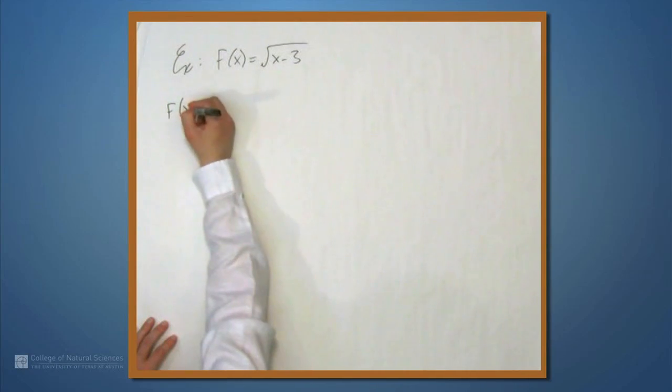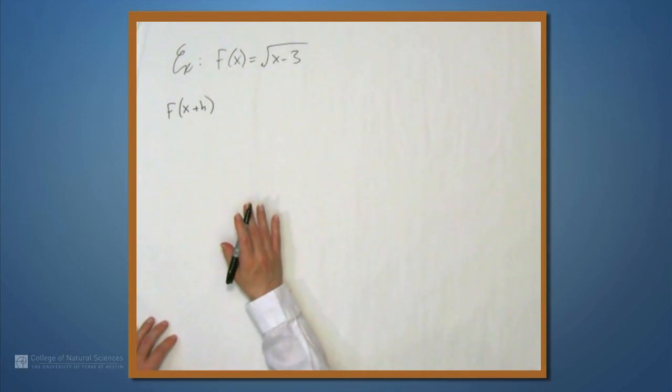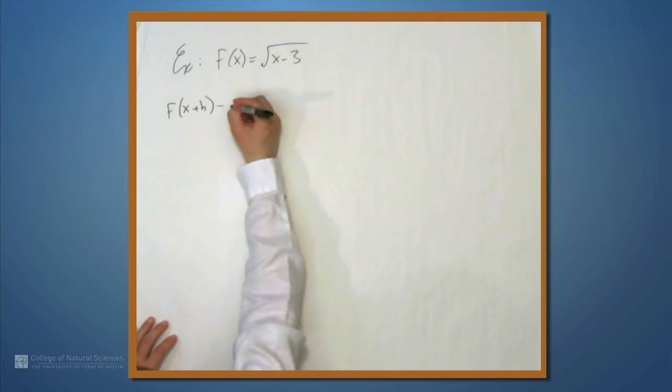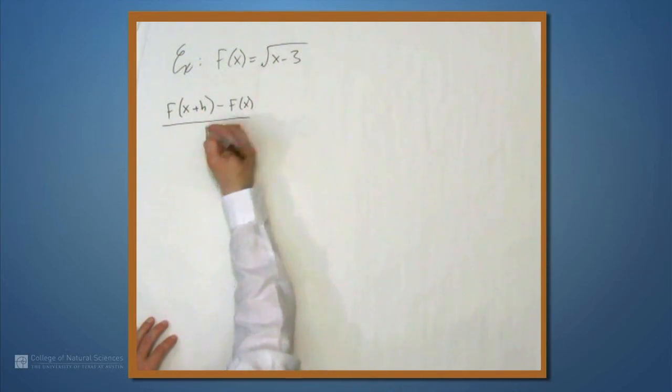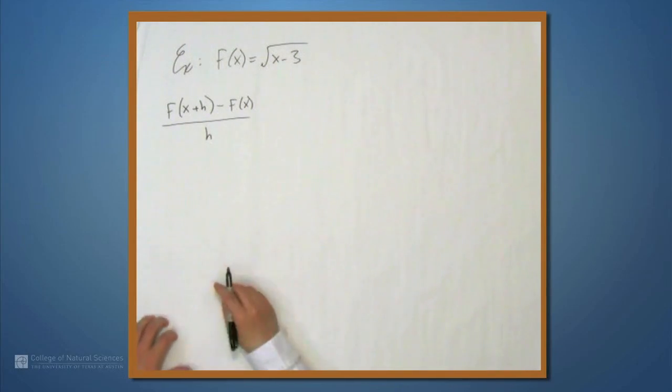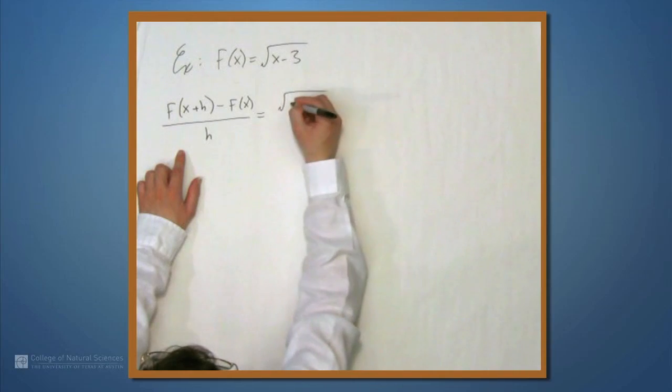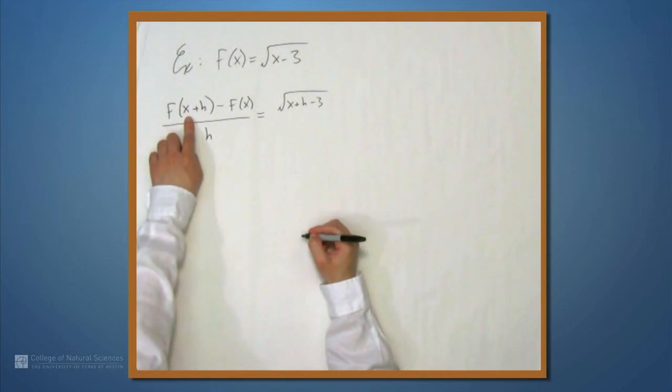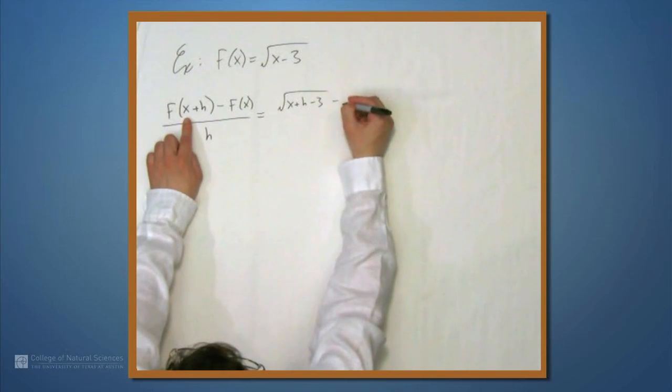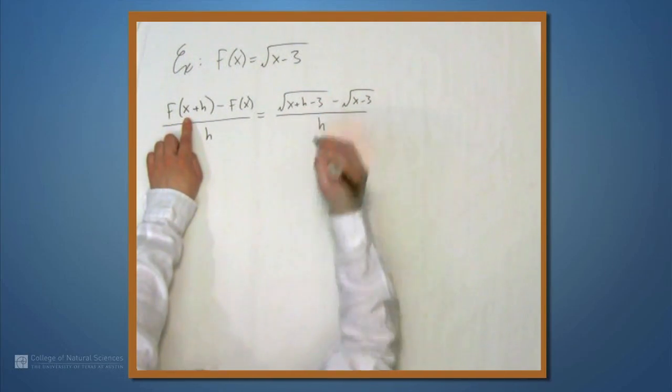I like to look at the difference quotient first, not having to worry about any of that limit stuff, because figuring out the difference quotient usually involves some algebra. So, this is what we're looking for, this ratio. And in this case, this is going to be the square root of x plus h minus 3, that's f(x+h), minus the square root of x minus 3, all over h.